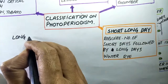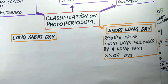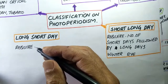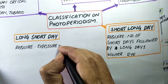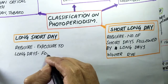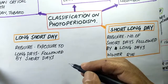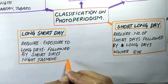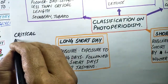Long Short Day Plants, as the name indicates, require long day conditions as well as short day conditions. They flower after exposure to long day conditions followed by short days, and are called long short day plants, such as night jasmine.